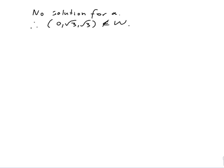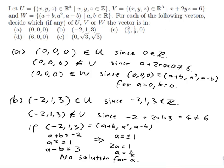And that's the end of the problem. It's interesting that W is much harder to decide membership for than U or V. For U and V there's a direct rule to check, but for W the only way to decide is to see if you can write the vector in the required form by solving a system of equations.